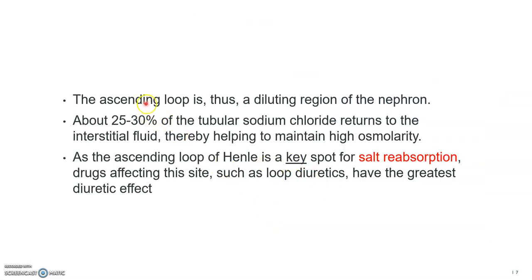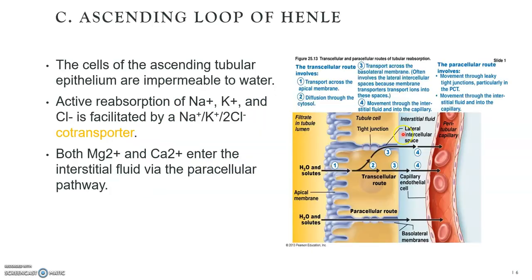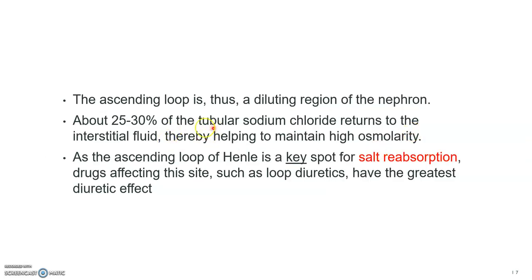So the ascending loop is therefore a diluting region of the nephron. About 25% of the tubular sodium chloride returns to the interstitial fluid, and this helps maintain the high osmolarity. And as we know, the ascending loop of Henle is a major spot for sodium chloride reabsorption. Therefore, drugs affecting this site, such as the loop diuretics, have the greatest diuretic effect.